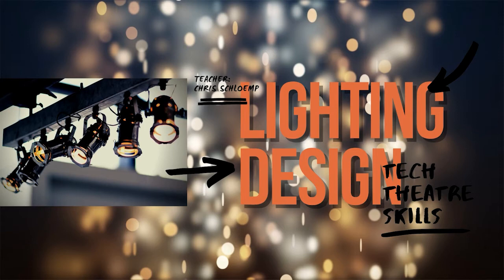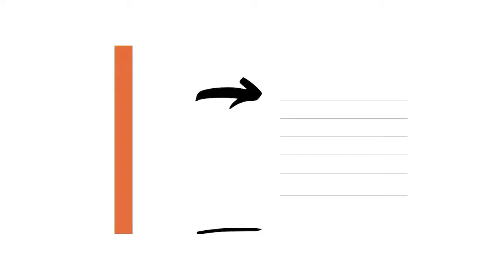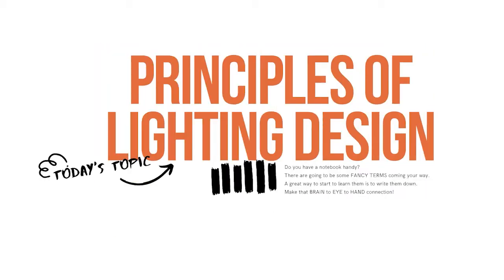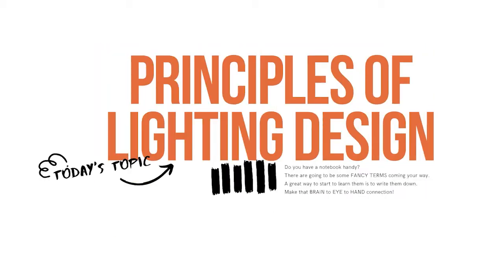This series is on lighting design, and it's geared for someone who is just beginning their adventures of discovery in terms of lighting in the theatre. This series is going to be broken down into seven parts, and this is episode one, where we'll be talking about the functions of lighting and the properties of light. There's some pretty hefty vocabulary coming your way right about now, including some more in-depth explanation. So I recommend you get out a pen and paper.